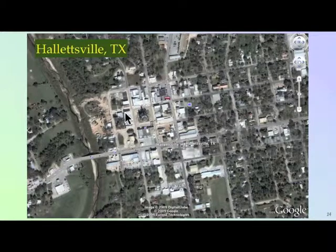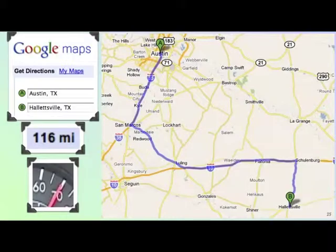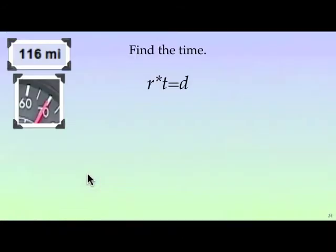So I looked it up on Google Maps and I found out that the best route to get there was about 116 miles and the highways were allowing me to cruise at about 69 miles per hour, and that was within the speed limit. So what we're going to do is calculate the approximate time it will take me to travel that distance of 116 miles at 69 miles per hour.